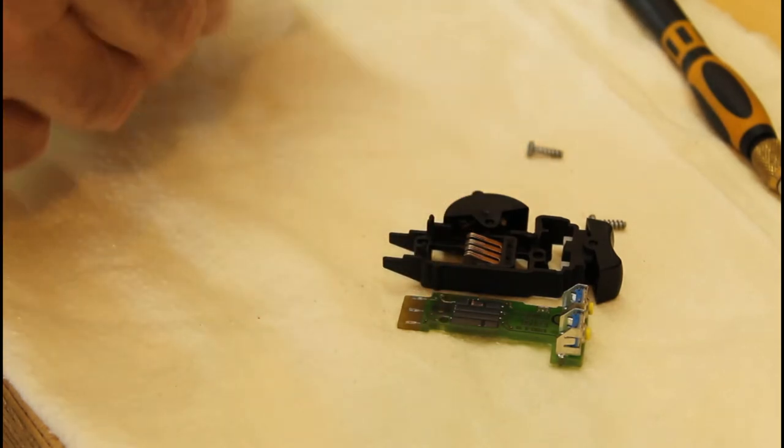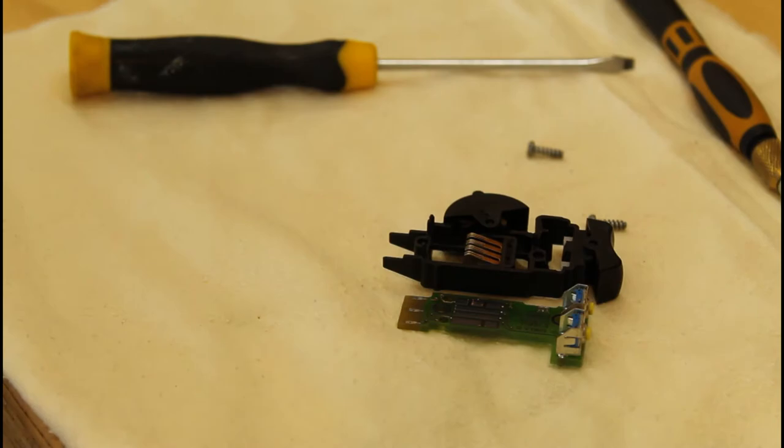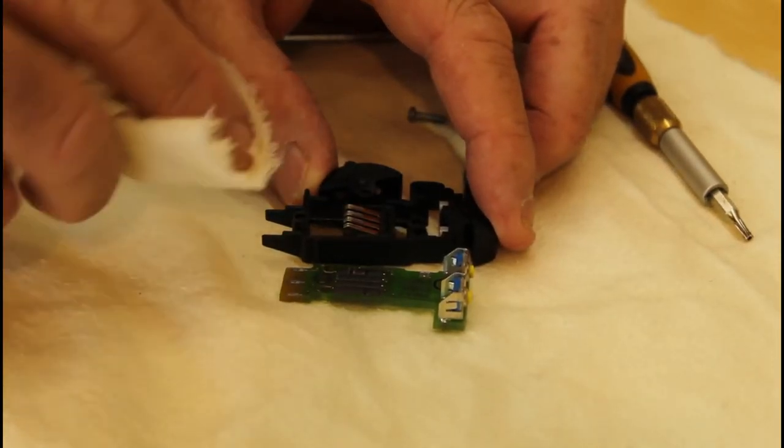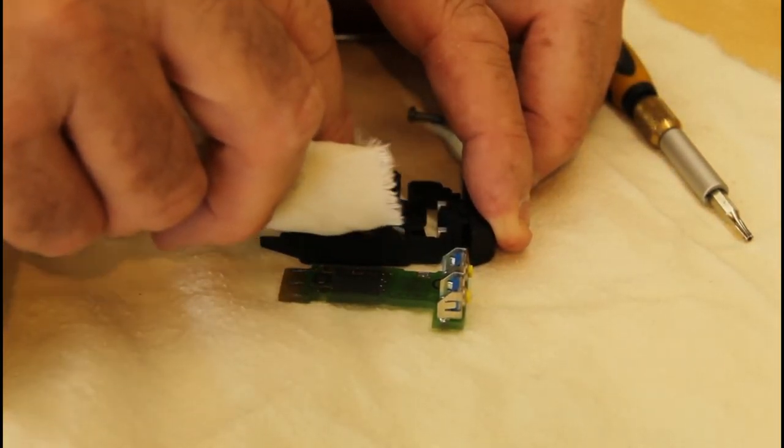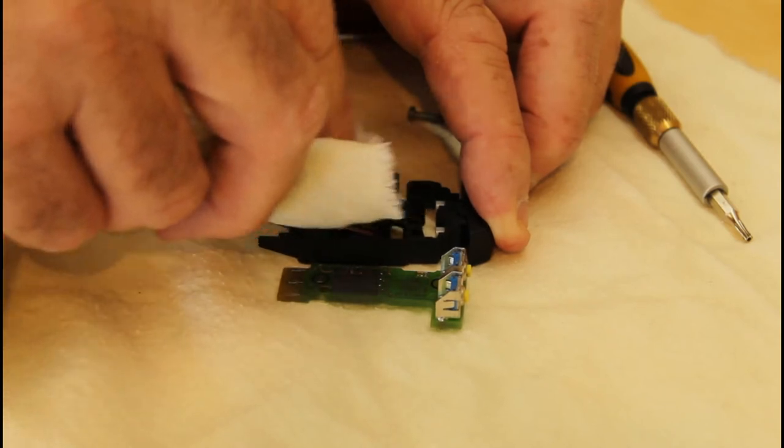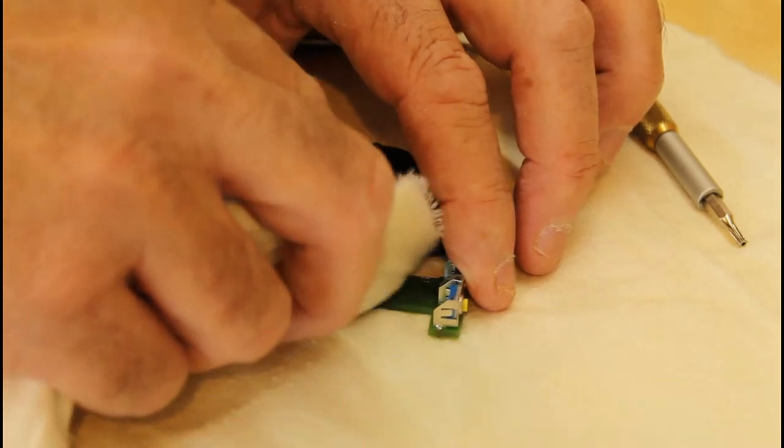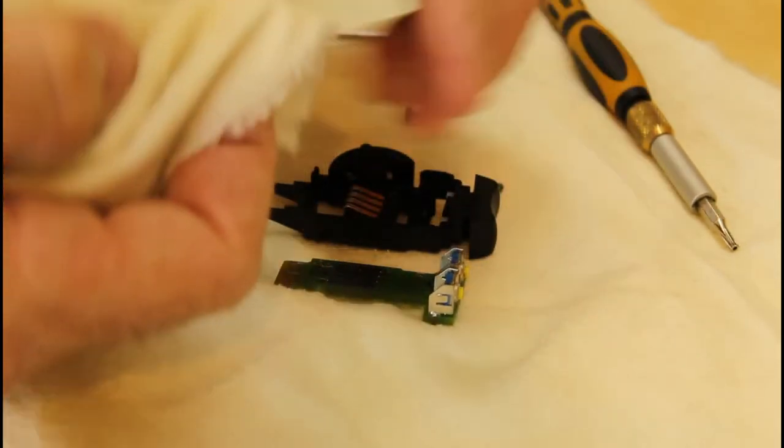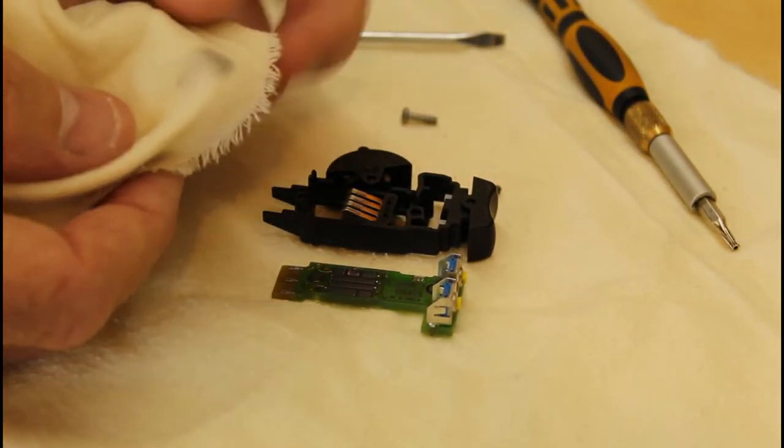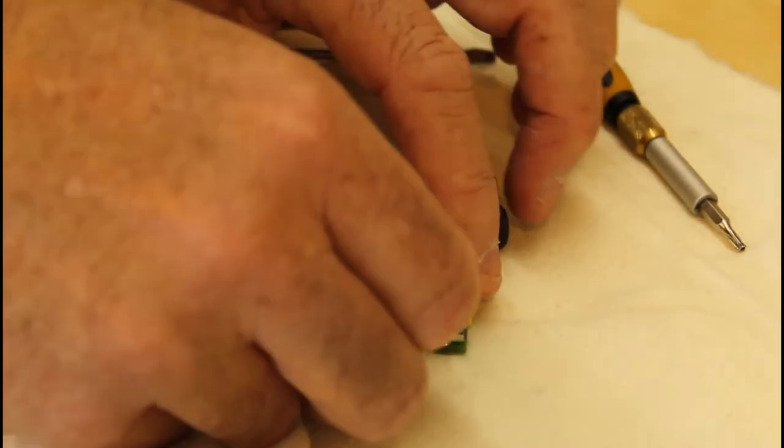Okay, so I've got a little bit of alcohol on the cloth there. You just rub that across there gently and again on the other contact points on the circuit board there. And you can see there's a little bit of rubbish coming off there.